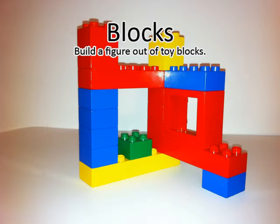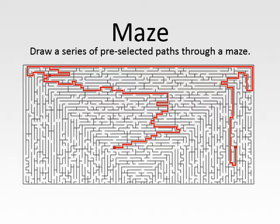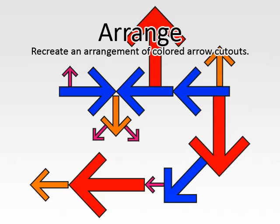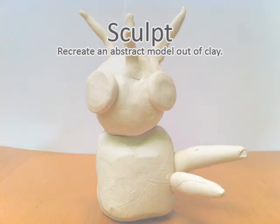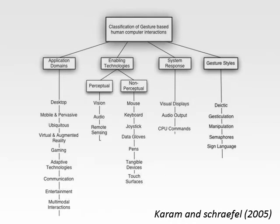Building a figure out of toy blocks. Drawing figures on a sheet of paper. Following a predefined path through a maze. Filling six glasses with liquid at specified levels and in a specified order. Arranging a number of colored paper cut-out arrows. And sculpting a figure out of modeling clay.